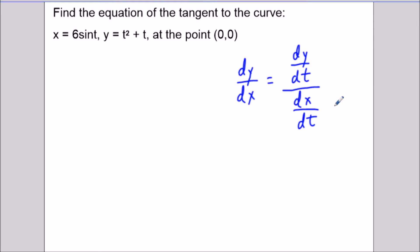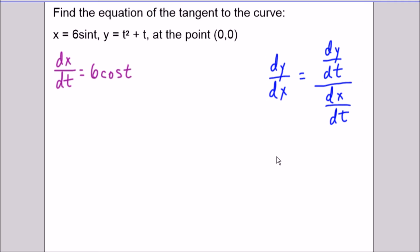So we have the x component here. We're going to take the derivative with respect to time. And the derivative of 6sin(t) in terms of time is 6cos(t). Let's just move this over here. Now for the next part, we're going to take the derivative of the y component. And the derivative of the y component with respect to time using power rule is 2t + 1.